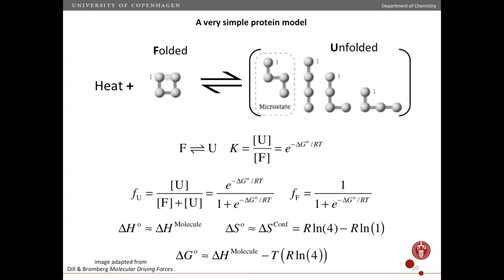Here's a very simple model of a small protein or polymer. You have the folded state, and then you have the unfolded macrostate, meaning that there are several ways of having an unfolded structure — in this case, four. When you heat it up, you go from a predominantly folded to a predominantly unfolded state. The equilibrium is between folded and unfolded, and the equilibrium constant can be written in terms of delta G standard. From this, we can derive the expression for the fraction of the unfolded protein and the fraction in the folded state.